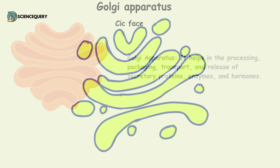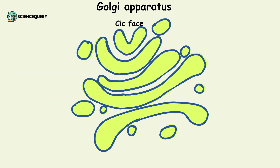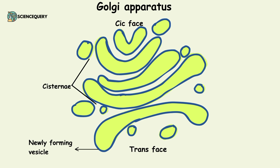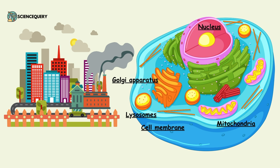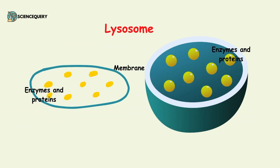Golgi apparatus includes the cis phase, trans phase, newly forming vesicles, cisternae, secondary vesicles, lumen and incoming transport vesicles. The next important organelle is the lysosomes. They act as a recycling center of a cell — just like the recycling center of a city where all the waste products go, lysosomes help in cleaning the waste products of the cell.